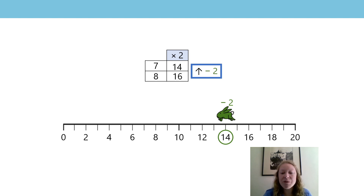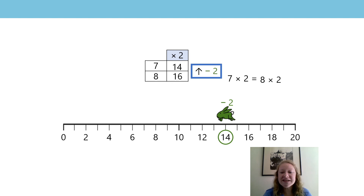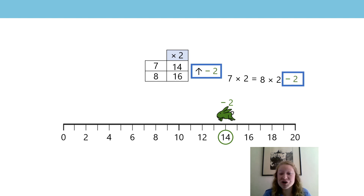So let's have a look at how we write that as an equation. We know that seven twos are equal to eight twos take away two — we have to take away that two, otherwise we're just left with eight twos, and that is not equal to seven twos. So we can see that seven twos are equal to eight twos minus one of the groups of two.